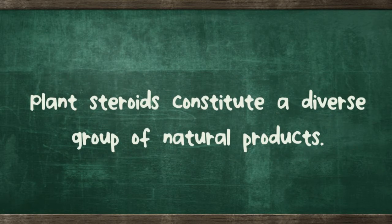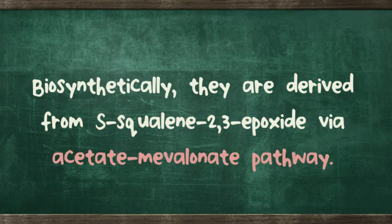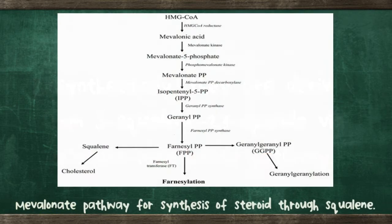Plant steroids constitute a diverse group of natural products. Biosynthetically, they are derived from the squalene-2,3-epoxide via the acetate-mevalonate pathway. This figure shows the mevalonate pathway for synthesis of steroids through squalene.